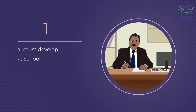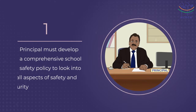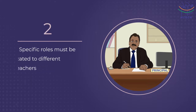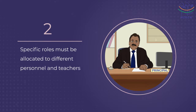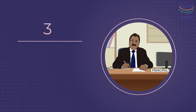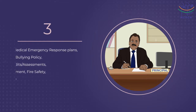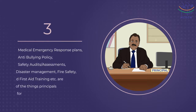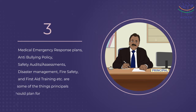The principals of the schools have their part to play too. 1. Principals must develop a comprehensive school safety policy to look into all aspects of safety and security. 2. Specific roles must be allocated to different personnel and teachers. 3. Medical emergency response plans, anti-bullying policy, safety audits or assessments. 4. Disaster management, fire safety and first aid training are some of the things principals should plan for.